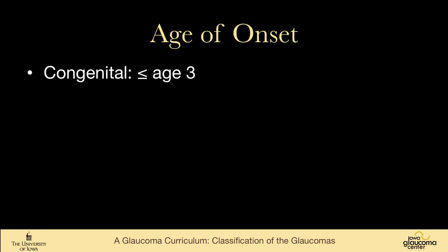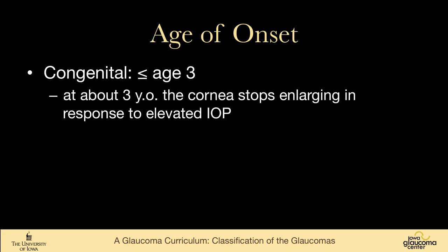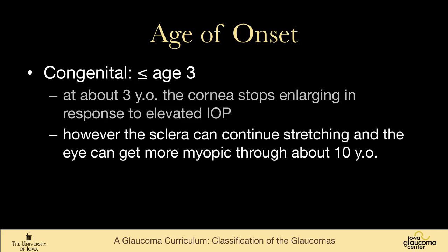We usually consider glaucoma to be congenital if it occurs at three years of age or less, because at about three years old the cornea stops enlarging in response to elevated intraocular pressure. The eye itself can continue to grow — the sclera can grow up through about age ten, so the patient can get more myopic if the glaucoma is poorly controlled. But usually age three is the cutoff for congenital glaucoma.